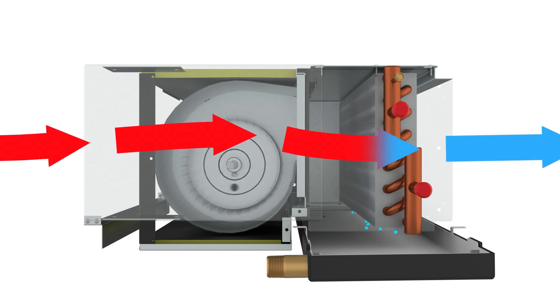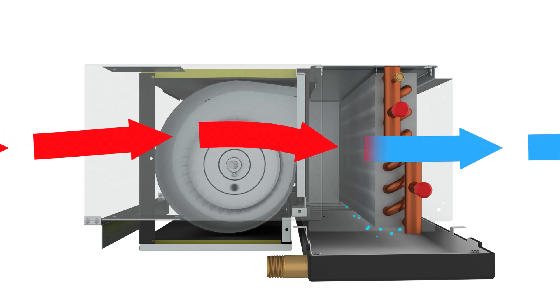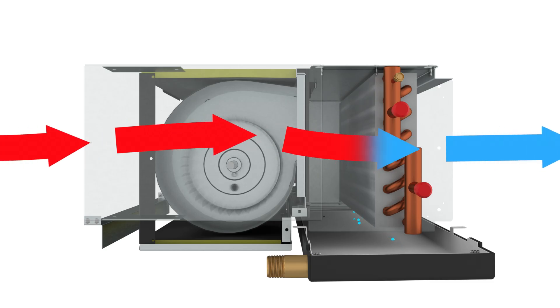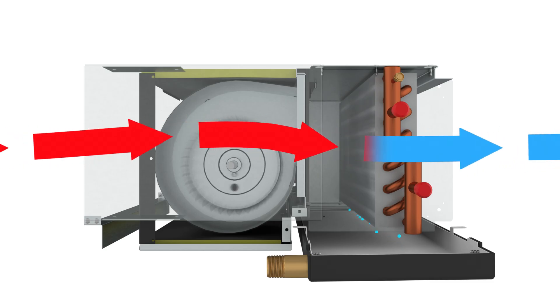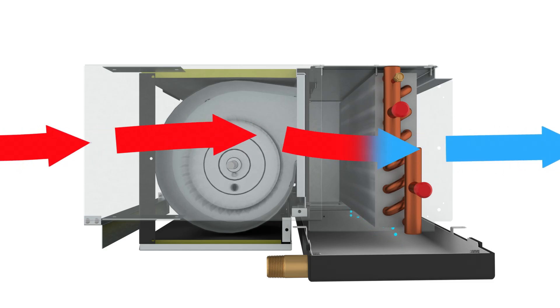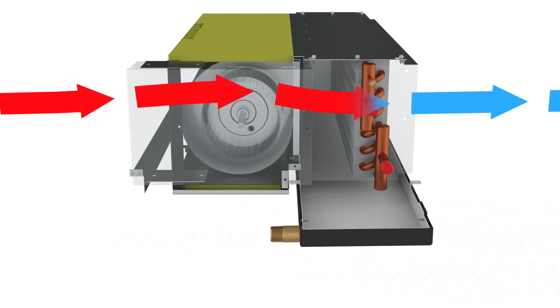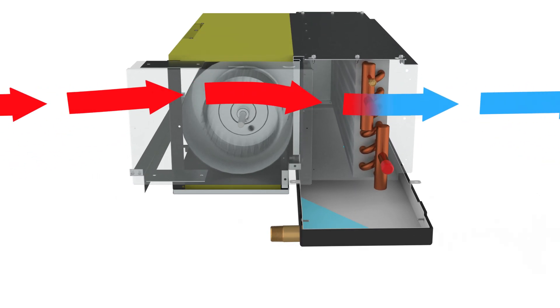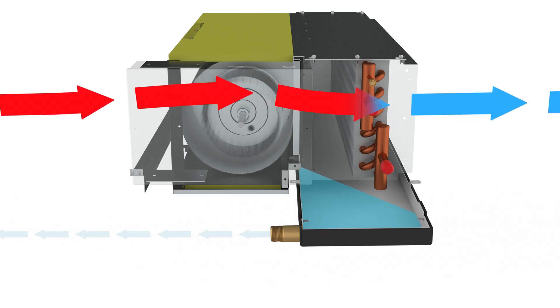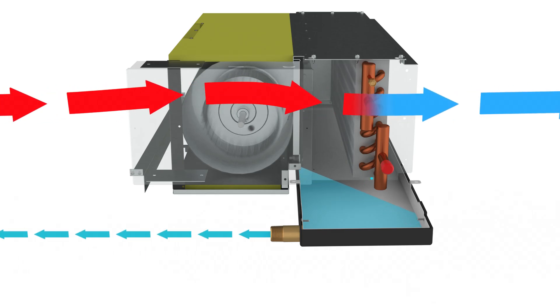Gravity and positive air pressure push the condensate through drain slots in the bottom of the coil, and the sloped drain pan collects this fluid so that it can be disposed of or reintegrated into the building system for other uses.